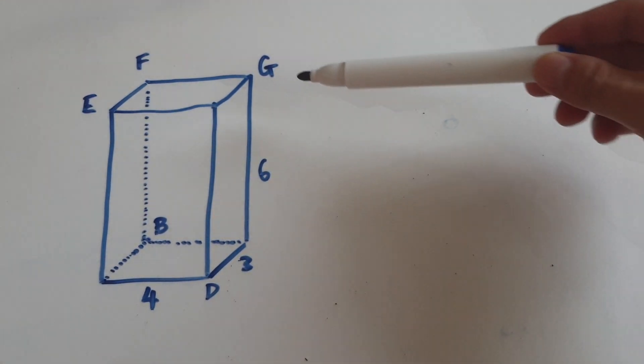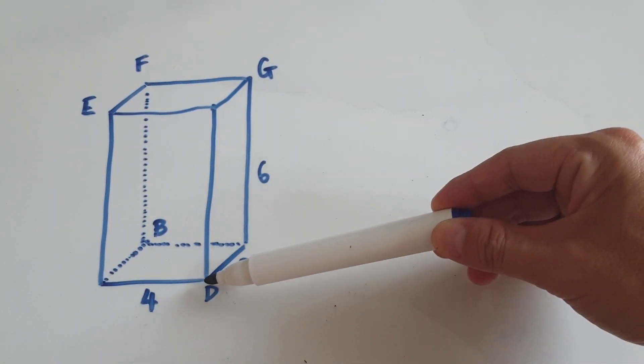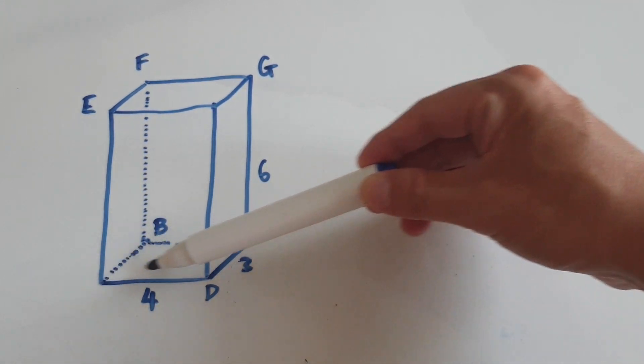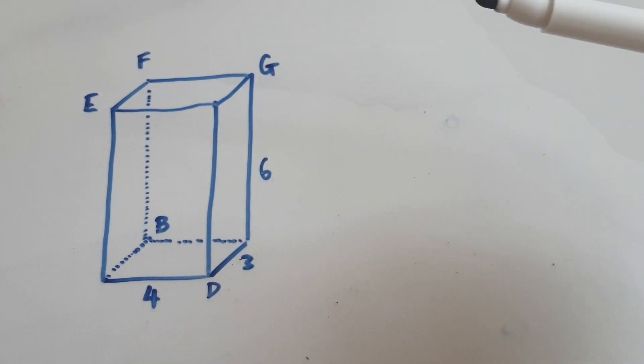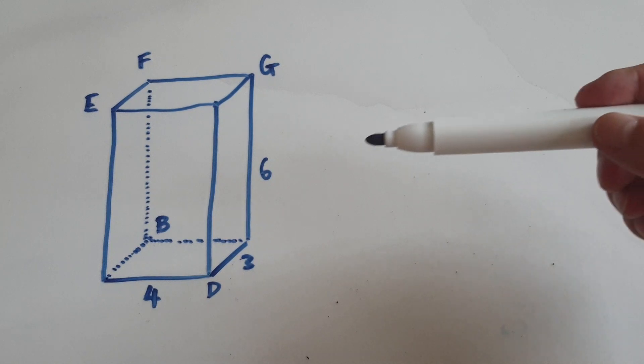So here you've got a cuboid where the height is 6, this length here is 3, and this length here is 4. In this video we're going to find all the diagonal lengths.